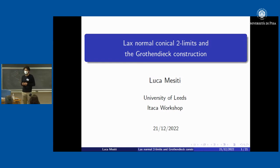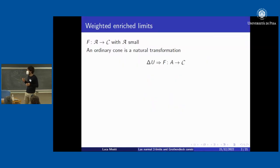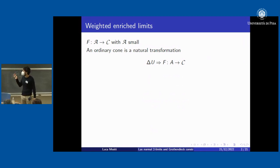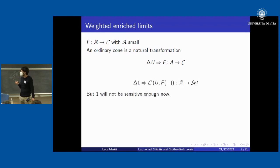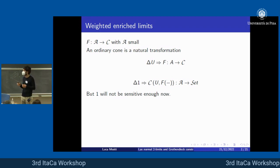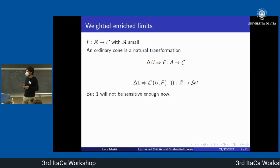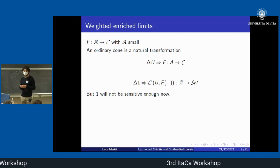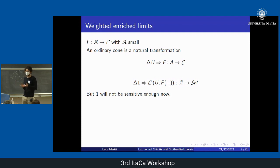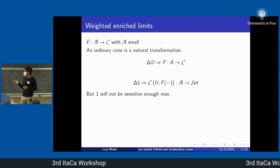We will study the Grothendieck construction and an extended version of it from a more abstract point of view, using lax normal limits. In particular, we will establish a pointwise Kan extension result. Let's first recall that an ordinary cone on some F with vertex u can be written as a natural transformation from the constant at u to F, or equivalently from the constant at one.